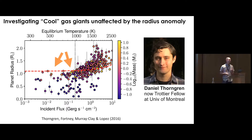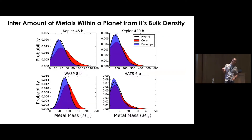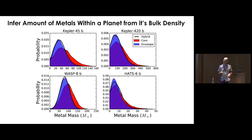Daniel has done this in a fully Bayesian way by running many thousands of models per planet. For instance, for WASP-8 we can infer there are something like 80 Earth masses of heavy elements inside that planet, with a distribution around that. The details of whether heavy elements are mostly in a core or in the envelope aren't fully determined. We can do this for about 50 planets — here are four examples.